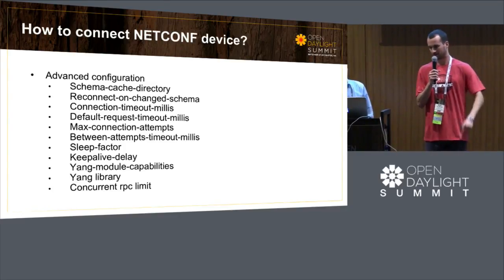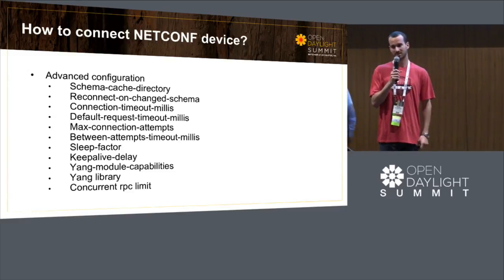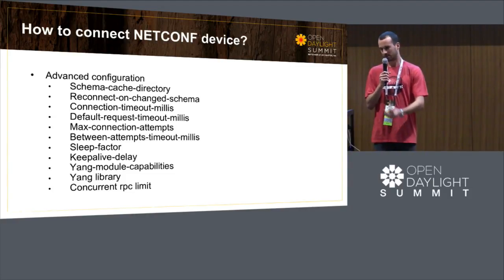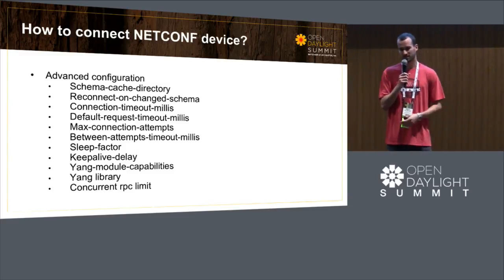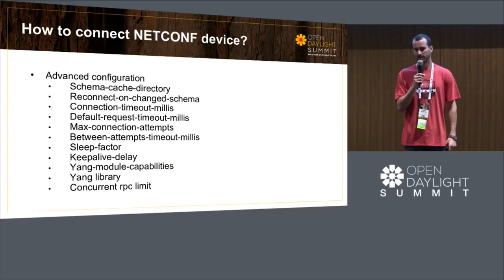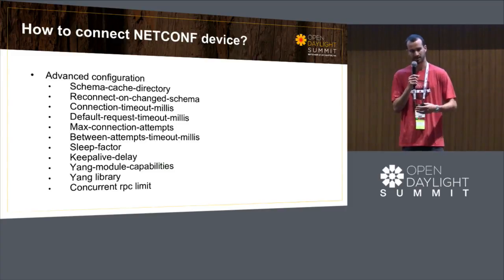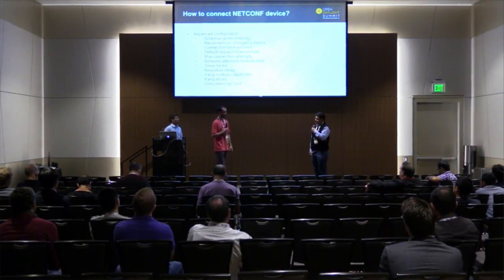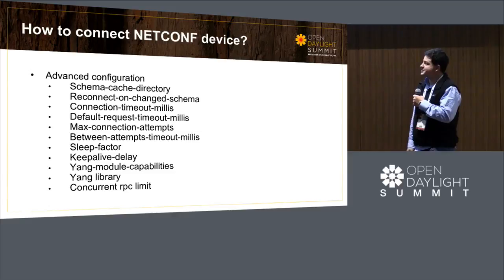There is also a default request timeout: when you're sending a request to your netconf device, if in a given number of seconds it hasn't replied, you can fail the request. There is also a keep alive delay, so you can enable a keep alive so OpenDaylight will send a blank edit-config request, and the netconf device would respond OK. That way you're sure the device is still connected and communicating with OpenDaylight fine. That one's important because some devices are really slow with getting back to you on get-config, so you can disable it by setting it to zero — though it'll appear as though the device is flapping.